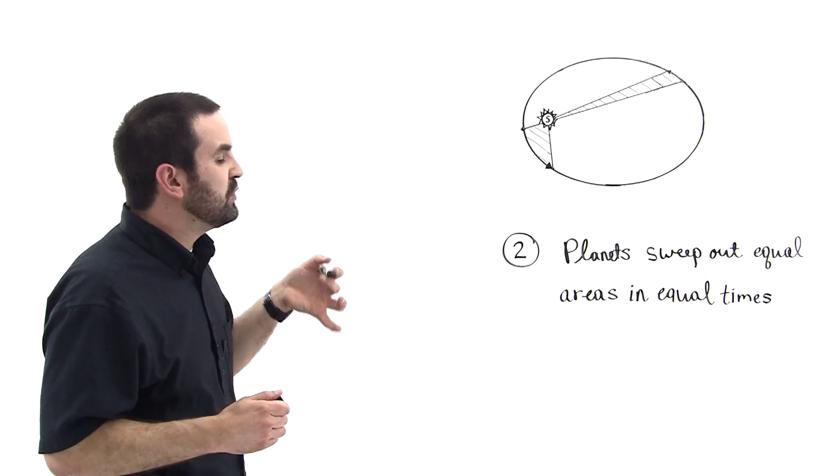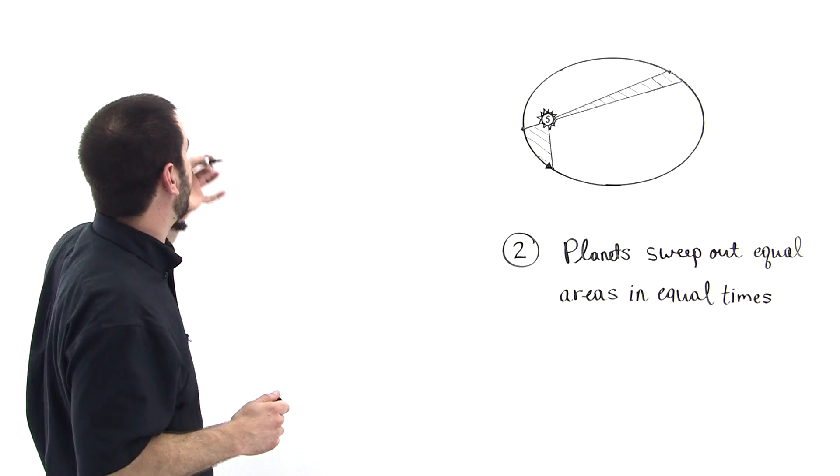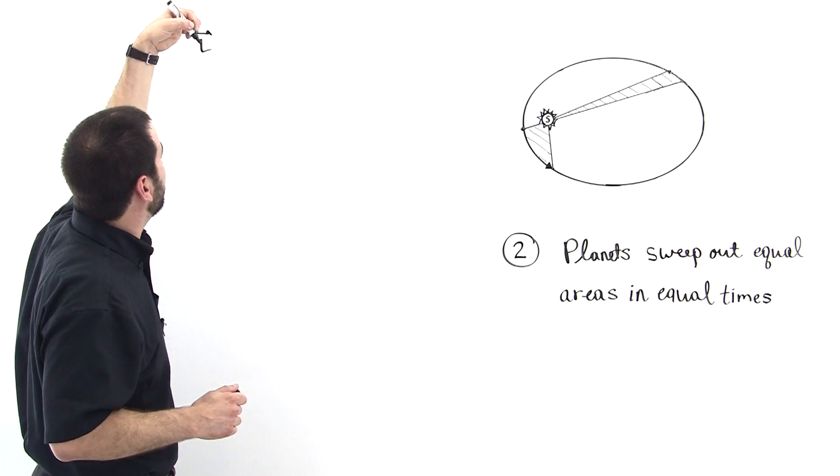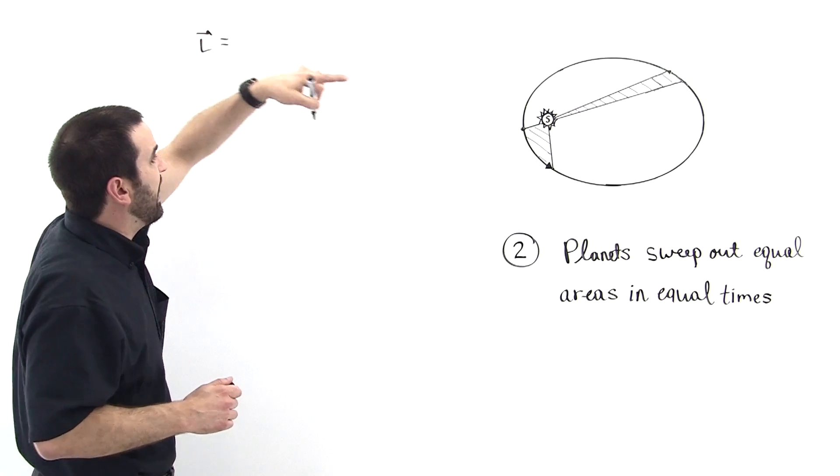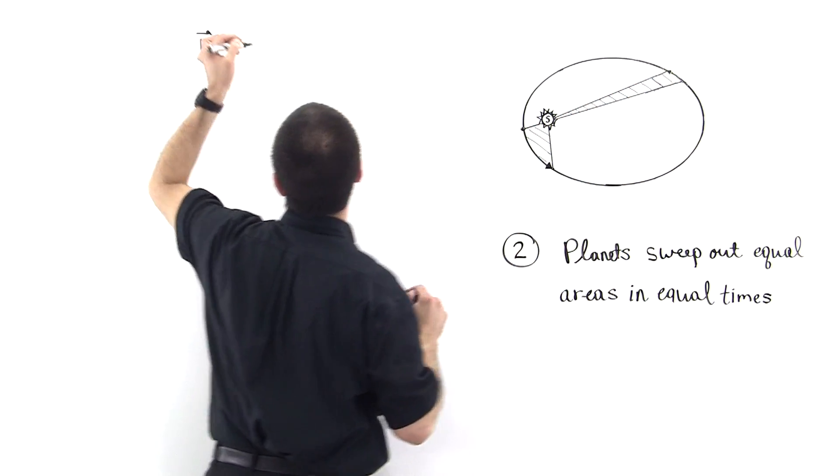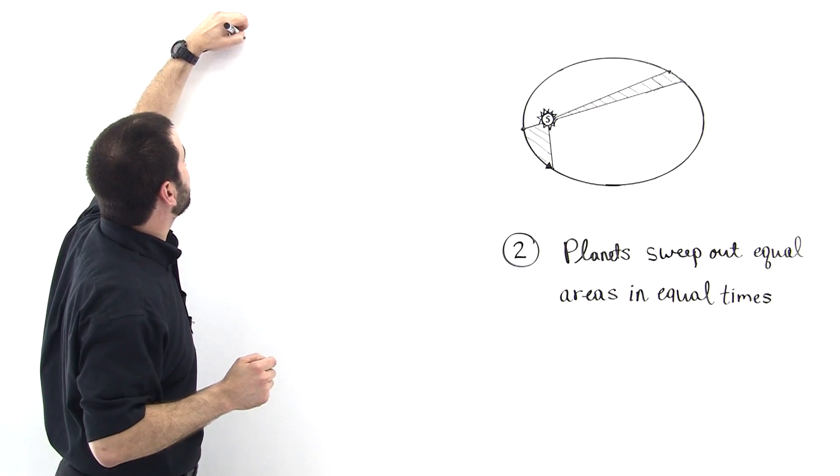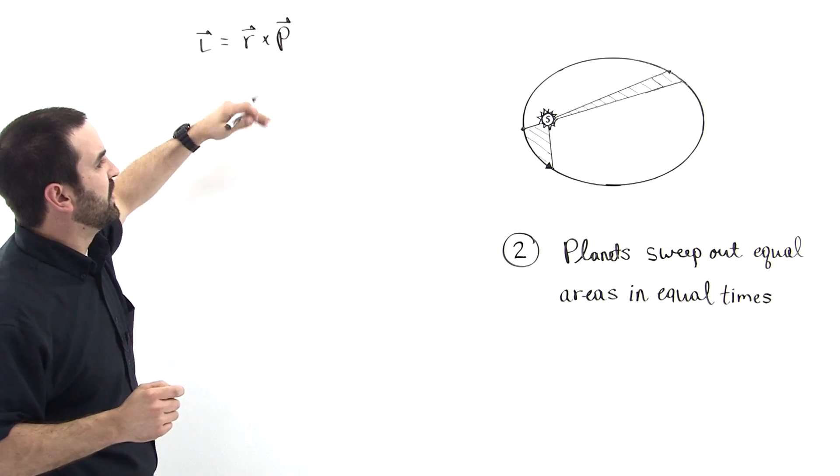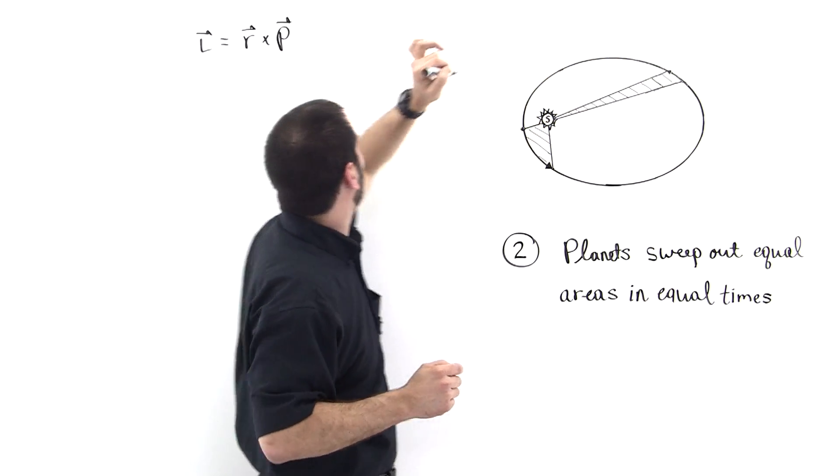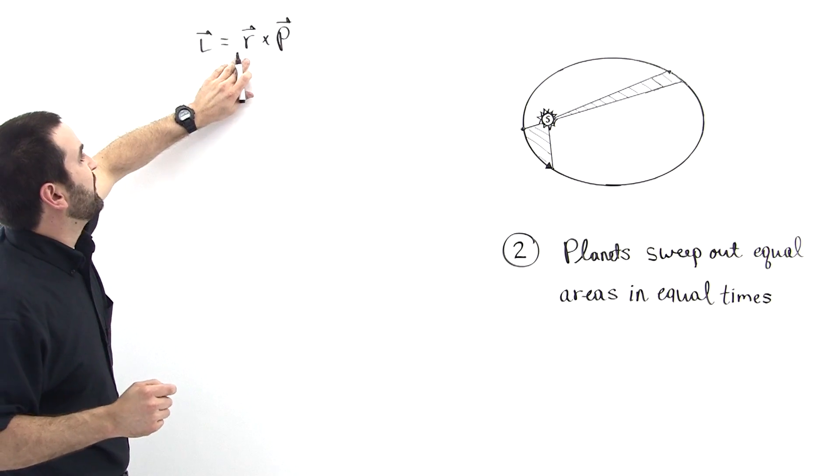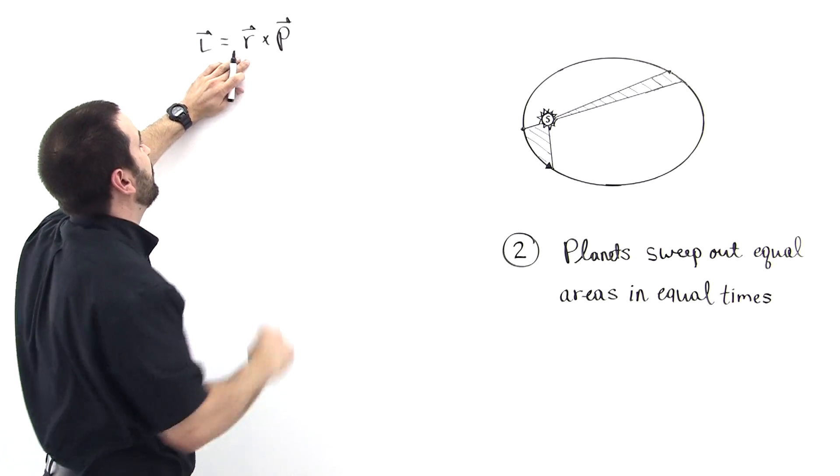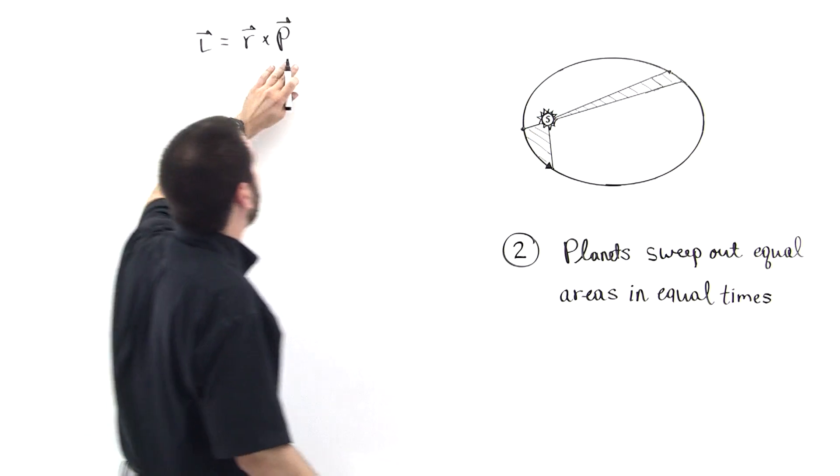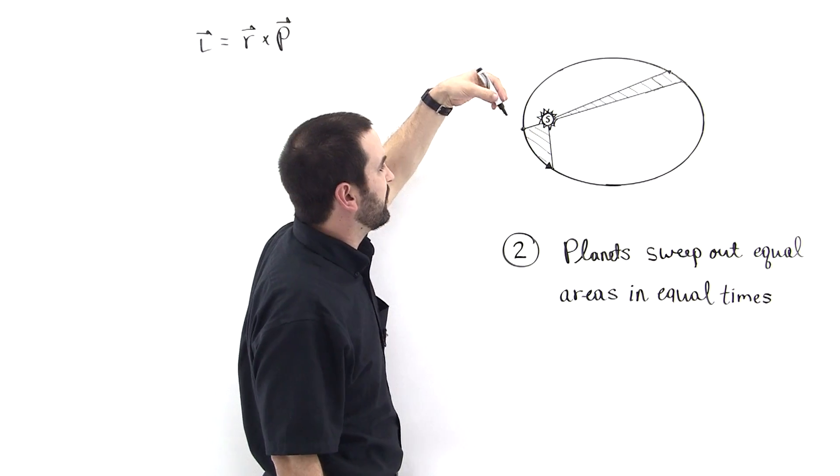So we can use that to deduce something very useful for solving problems. The first thing we're going to do, let's find the angular momentum of that planet over there at this distance away here. So the angular momentum is equal to r cross p, where r is the distance from the axis to the particle in question and it's the vector from the sun to the particle and then p is the momentum, the linear momentum.